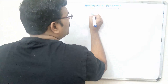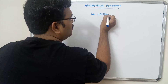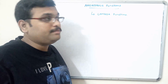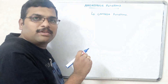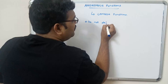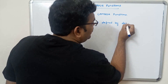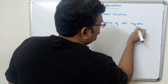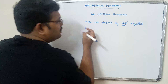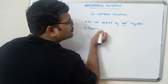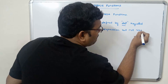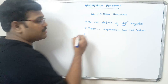These anonymous functions are also called lambda functions. These functions are not defined by the DEF keyword — they are defined using the lambda keyword. These functions will return an expression but not a variable, and these functions are one-line functions.